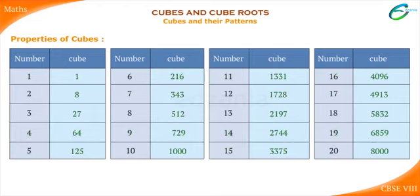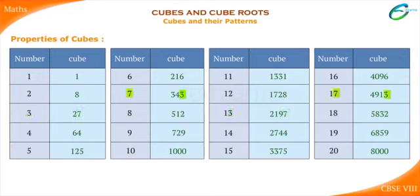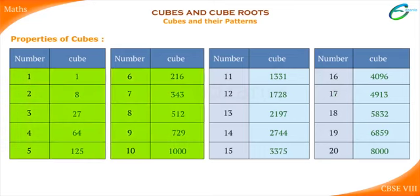Let's see some more interesting properties of cube numbers. The cube of a number ending with digit 2 ends with digit 8, and the cube of a number ending with digit 8 ends with digit 2. Similarly, if a number ends with digit 3, its cube ends with digit 7, and the cube of a number ending with digit 7 ends with digit 3. There are only 10 cube numbers from 1 to 1000, and only 4 cube numbers in the first 100 natural numbers.